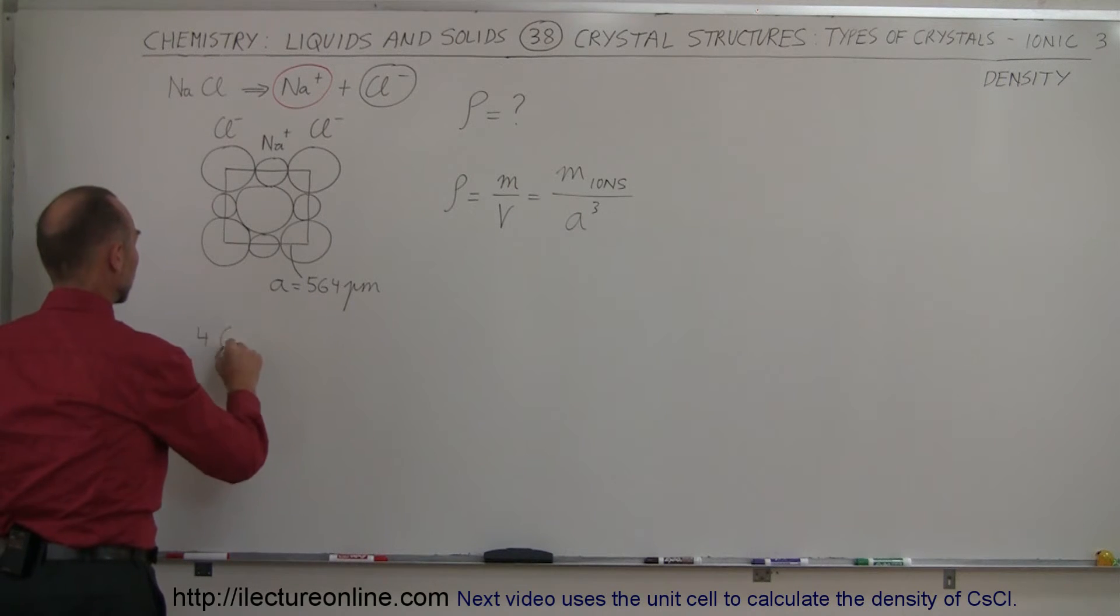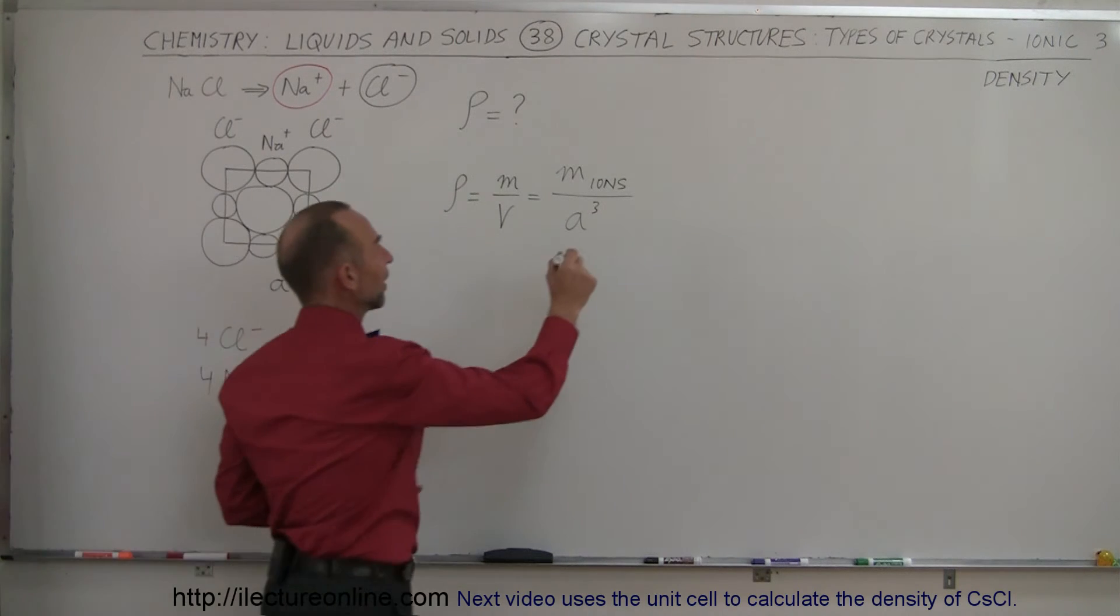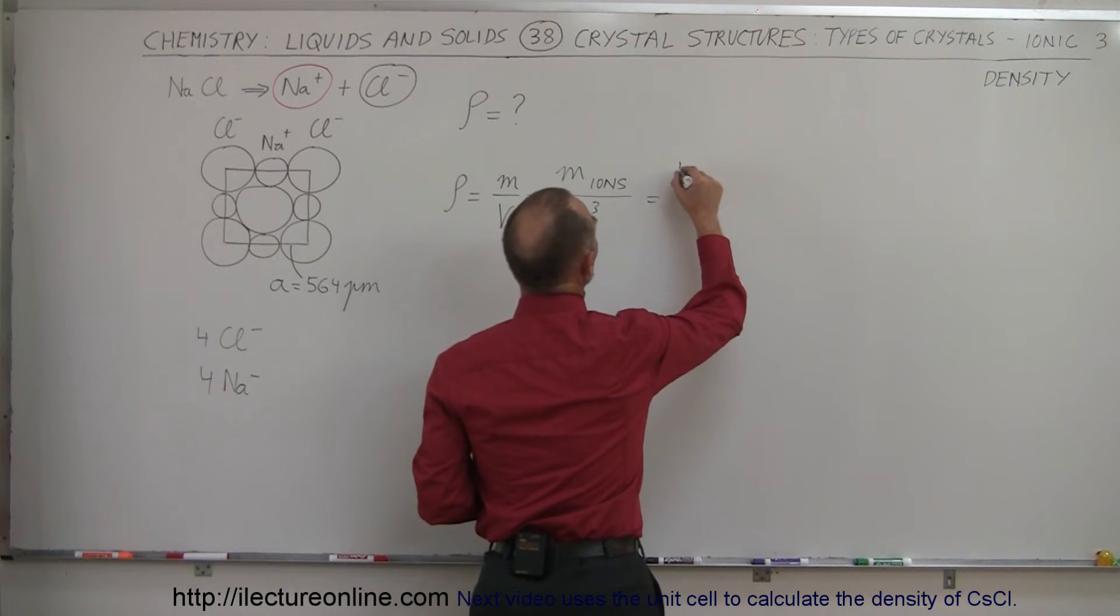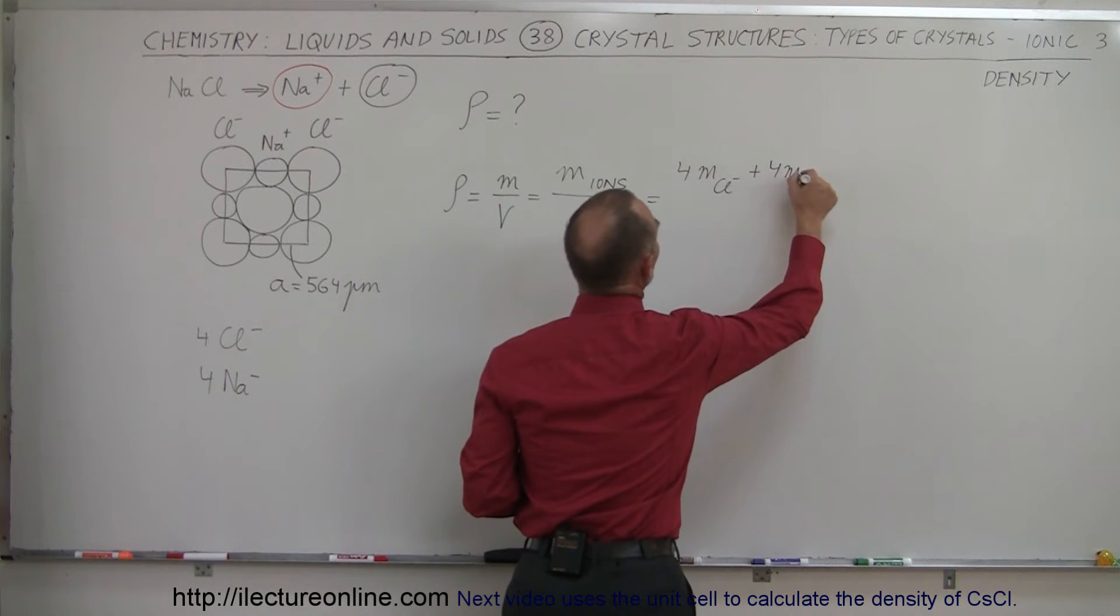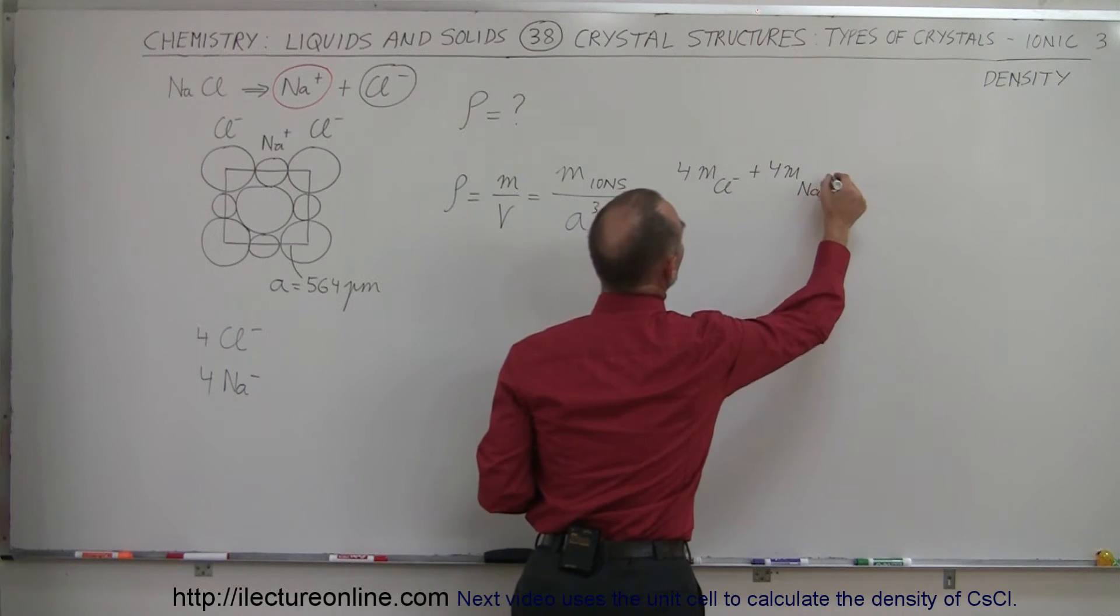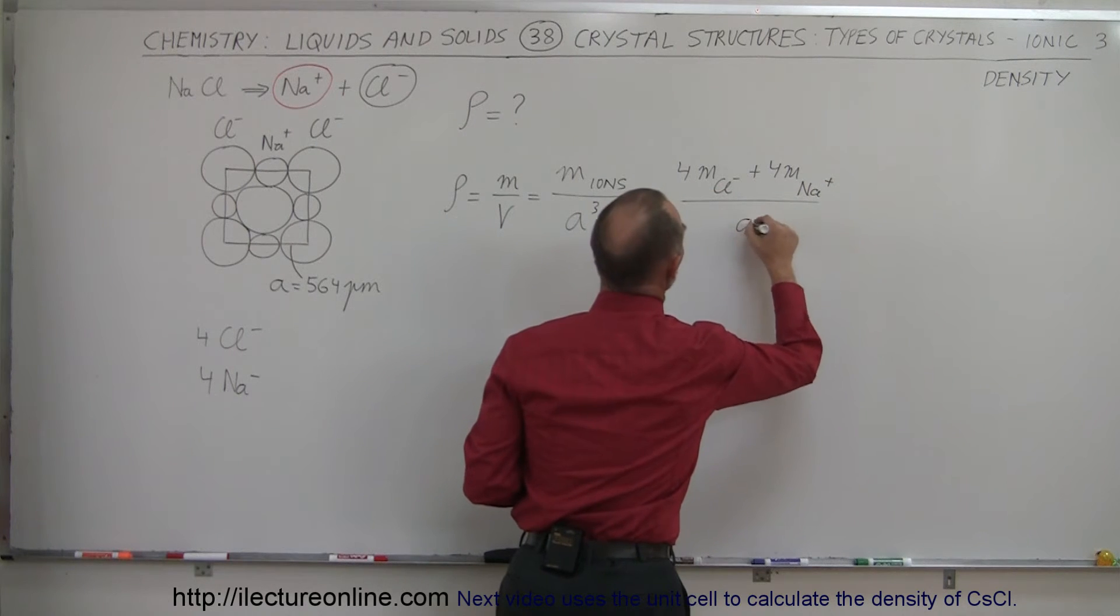It turns out that we have four chlorine ions and we have four sodium ions. So that means that we have to then say this is equal to four times the mass of a chlorine ion plus four times the mass of a sodium ion and we divide that then by the volume A cubed.